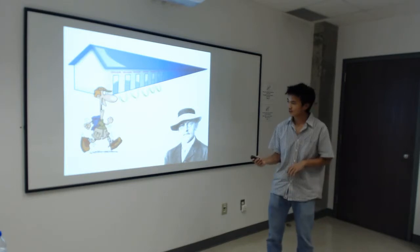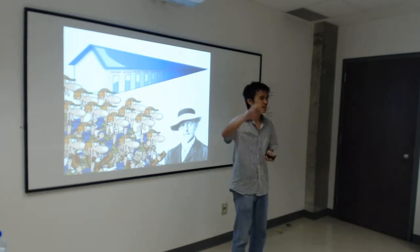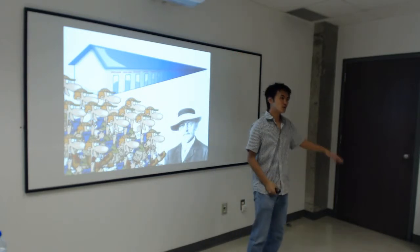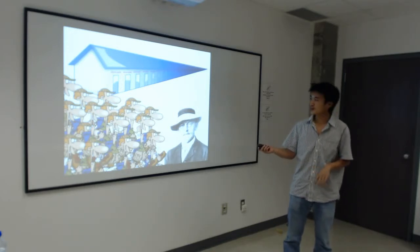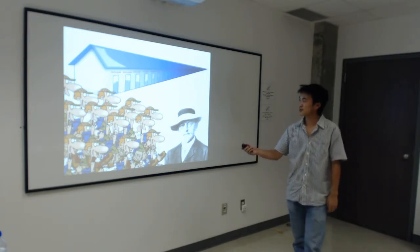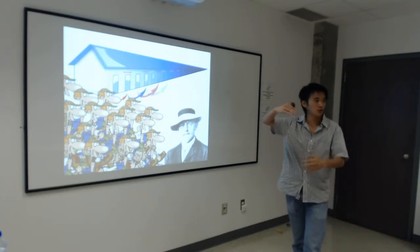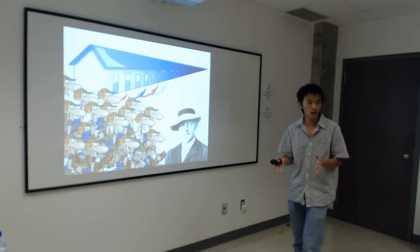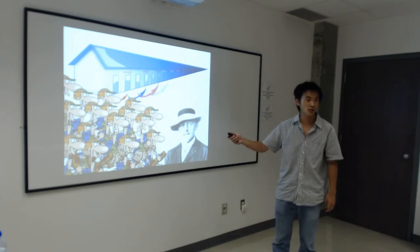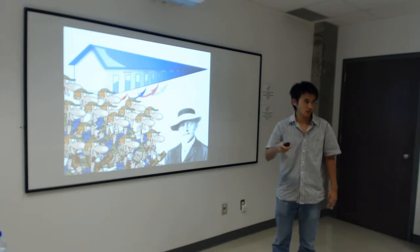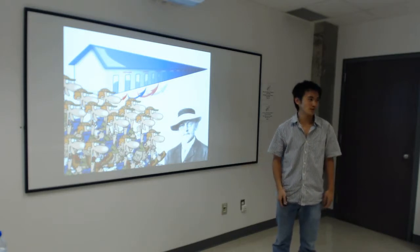Now let's go to something even weirder. What happens if we have an infinite number of newcomers? We can free an infinite number of rooms in this hotel. The person in room 1 moves to room 2, the person in room 2 moves to room 4, the person in room 3 moves to room 6 — you double the room number of each person. By doing so, everybody still has a room, but you've also freed all the odd-numbered rooms, and there's an infinite number of them. So you can fit all the infinite newcomers.